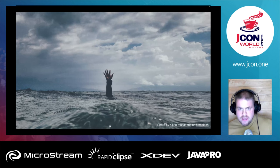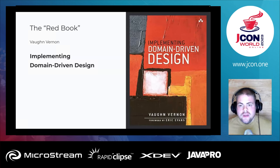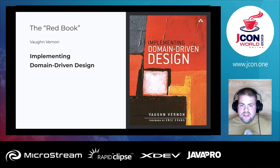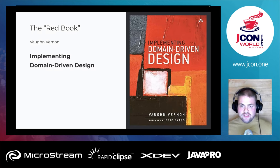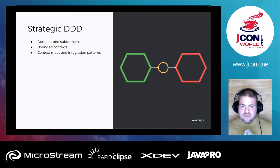That's when I stumbled upon the red book — Implementing Domain-Driven Design by Vaughn Vernon. There is a big difference between the red book and the blue book: Vernon begins his book with strategic design — subdomains and bounded contexts — whereas Evans finishes his book with them, which is why I missed them. So finally, boundaries were added to my DDD ubiquitous language.